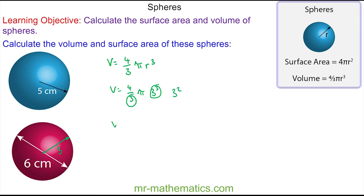So the volume is 4 multiplied by π multiplied by 3 squared. 3 squared is 9, and 9 times 4 is 36. So we have 36π centimeters cubed. We can approximate this as a decimal to get 113 centimeters cubed to three significant figures.